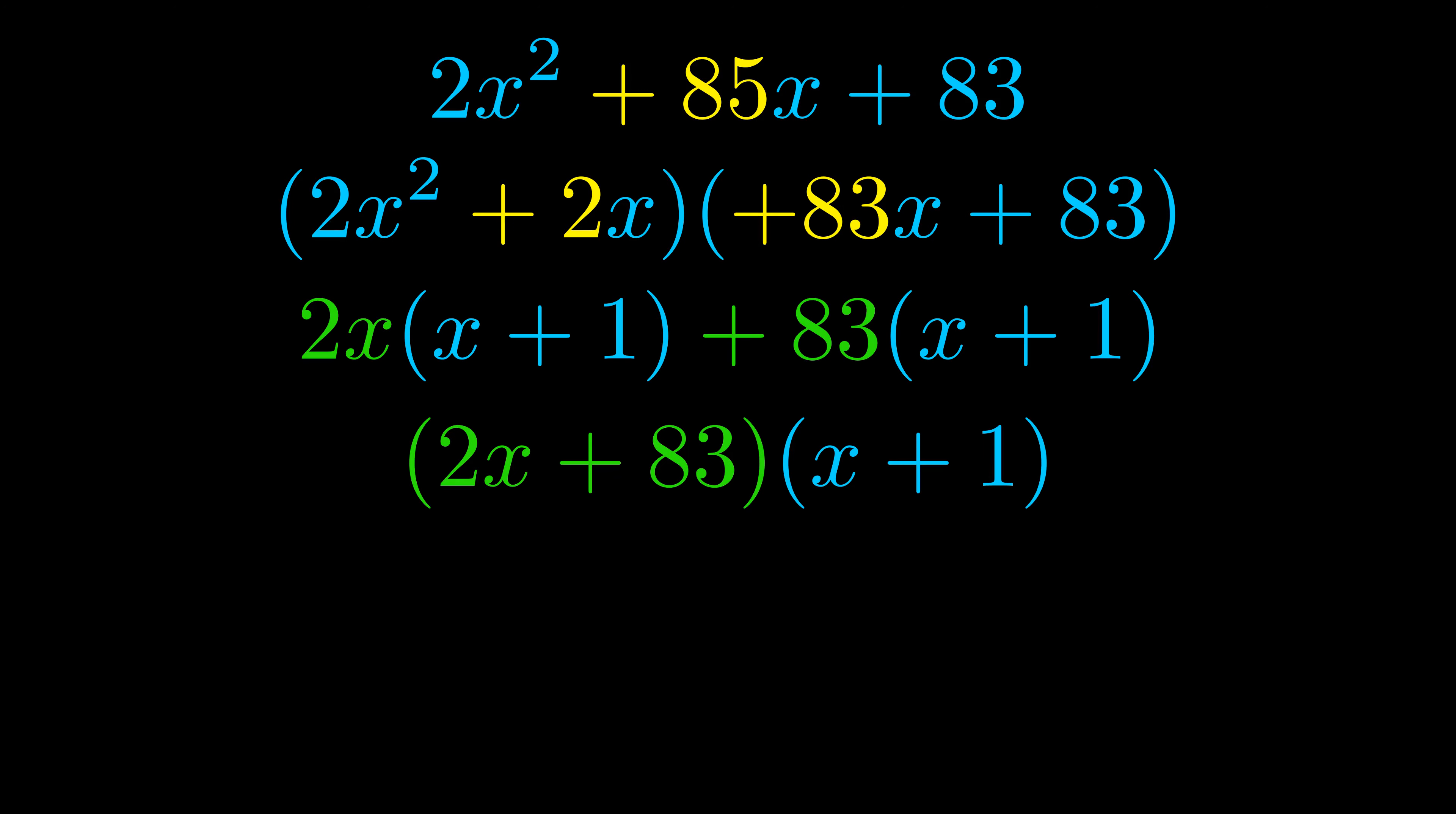The blue values are the same. Those blue values will become one of our factors and we will combine the two green values, the GCFs that we pulled out, to get the other one. And that is our fully factored equation.